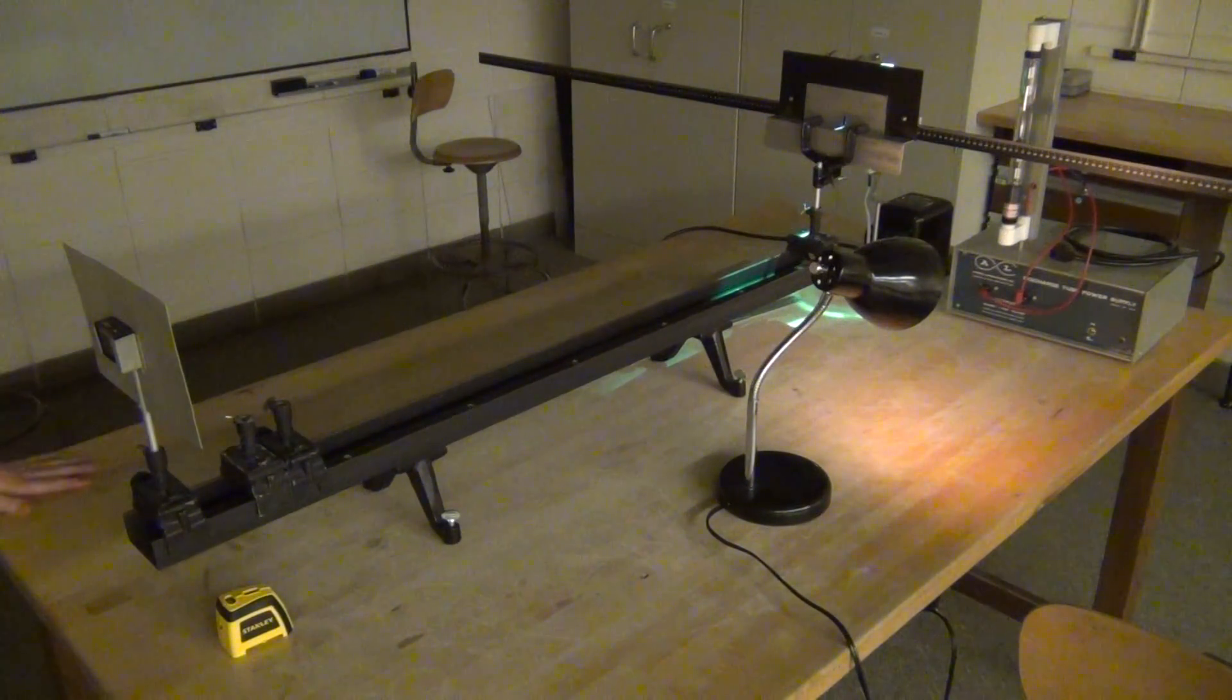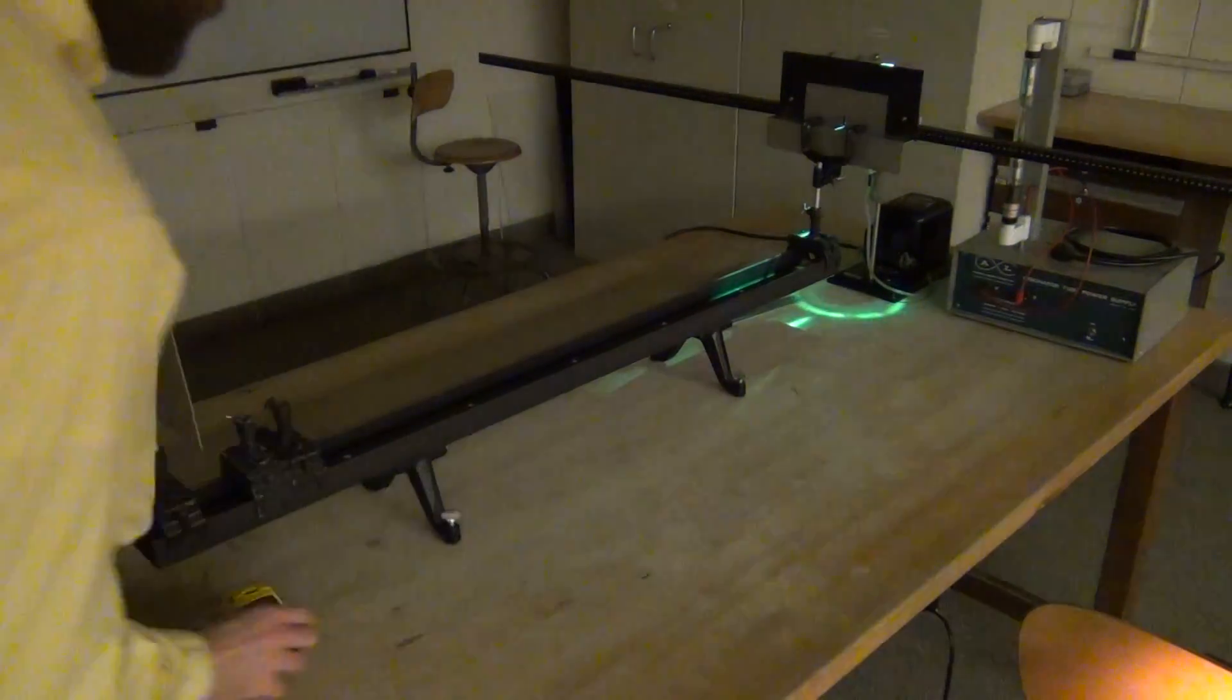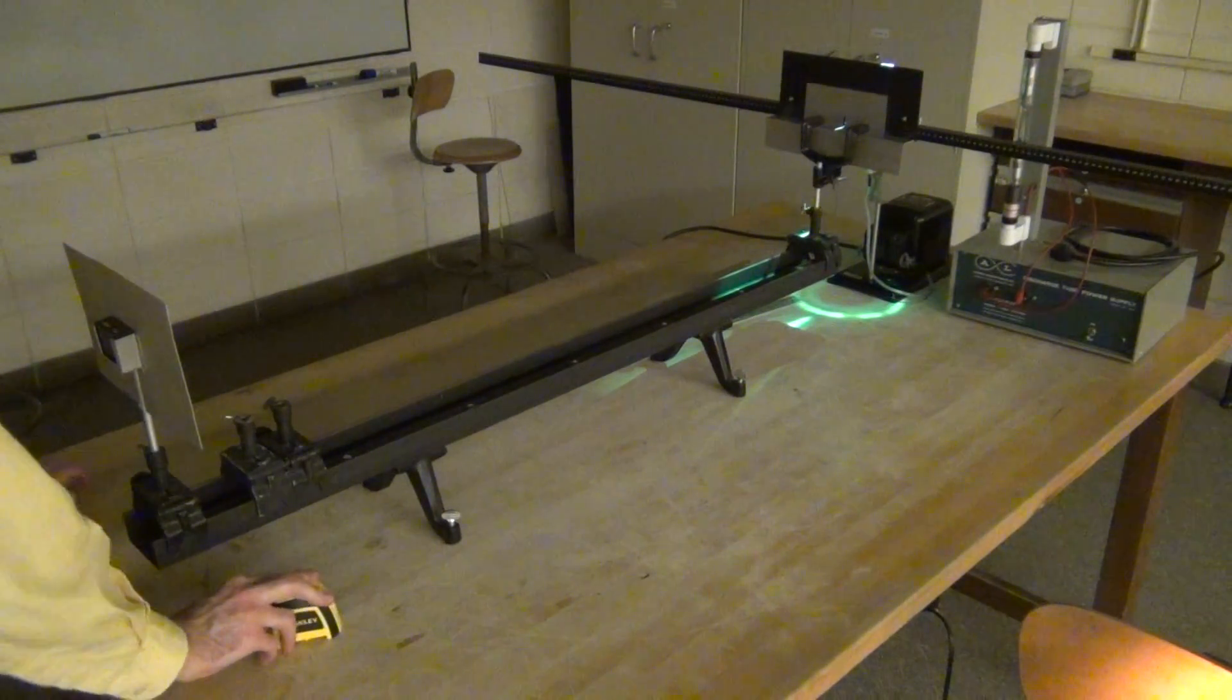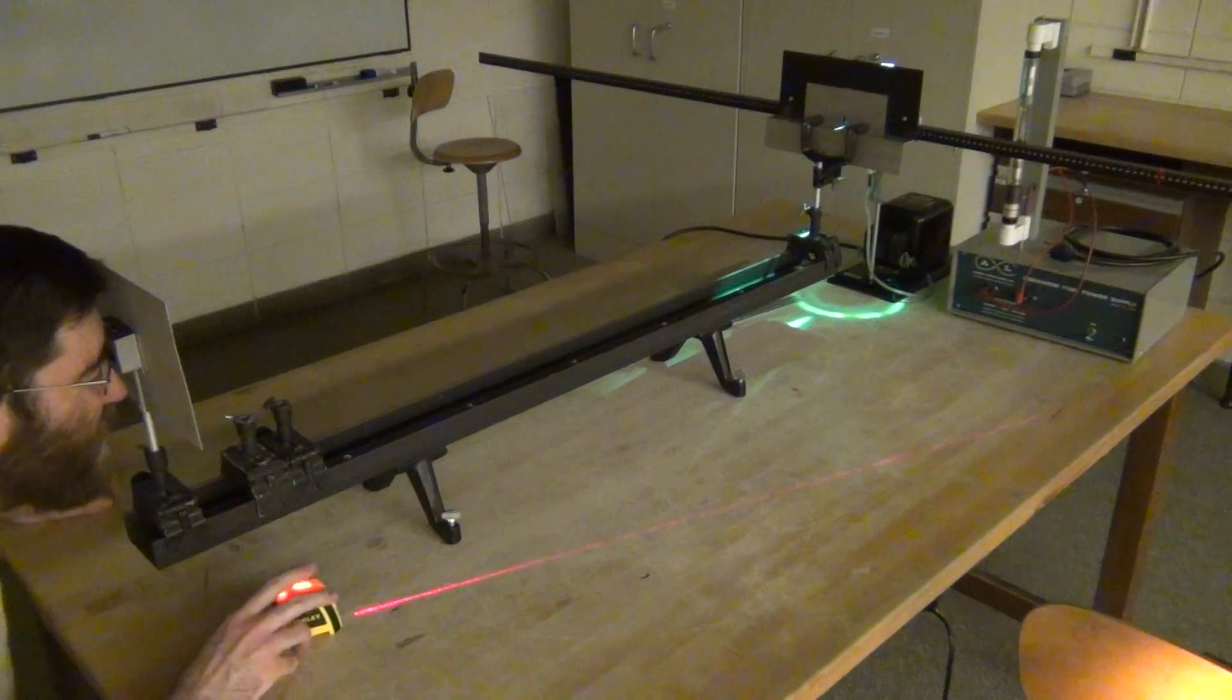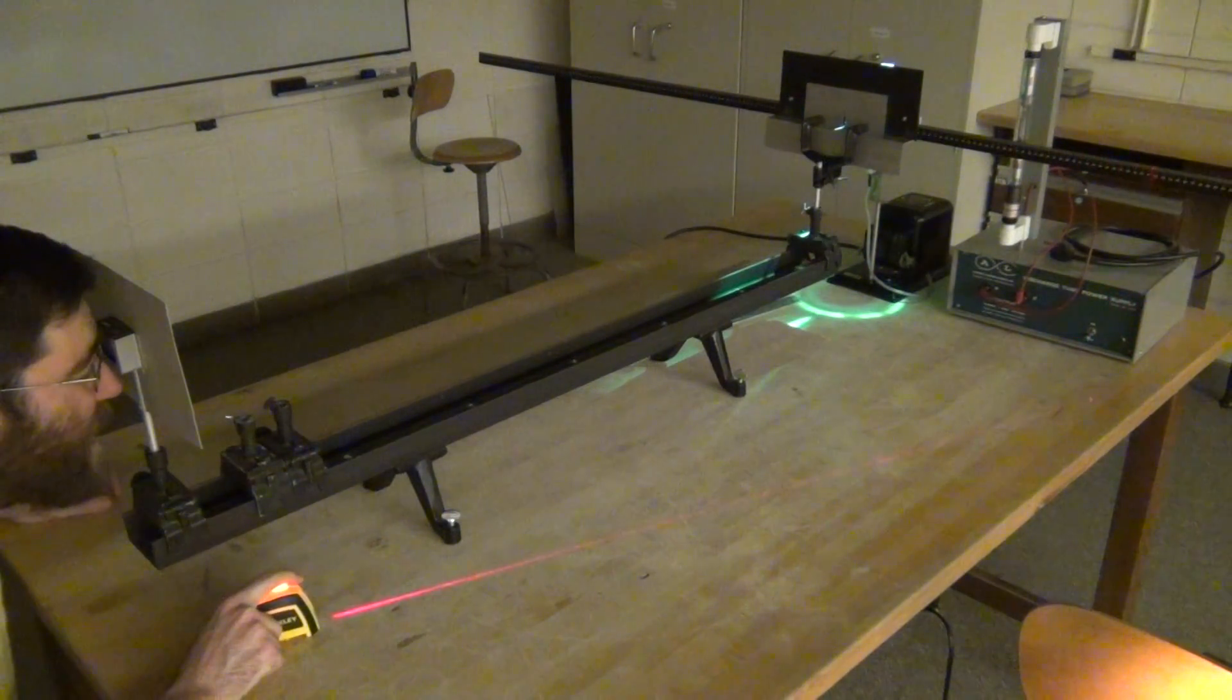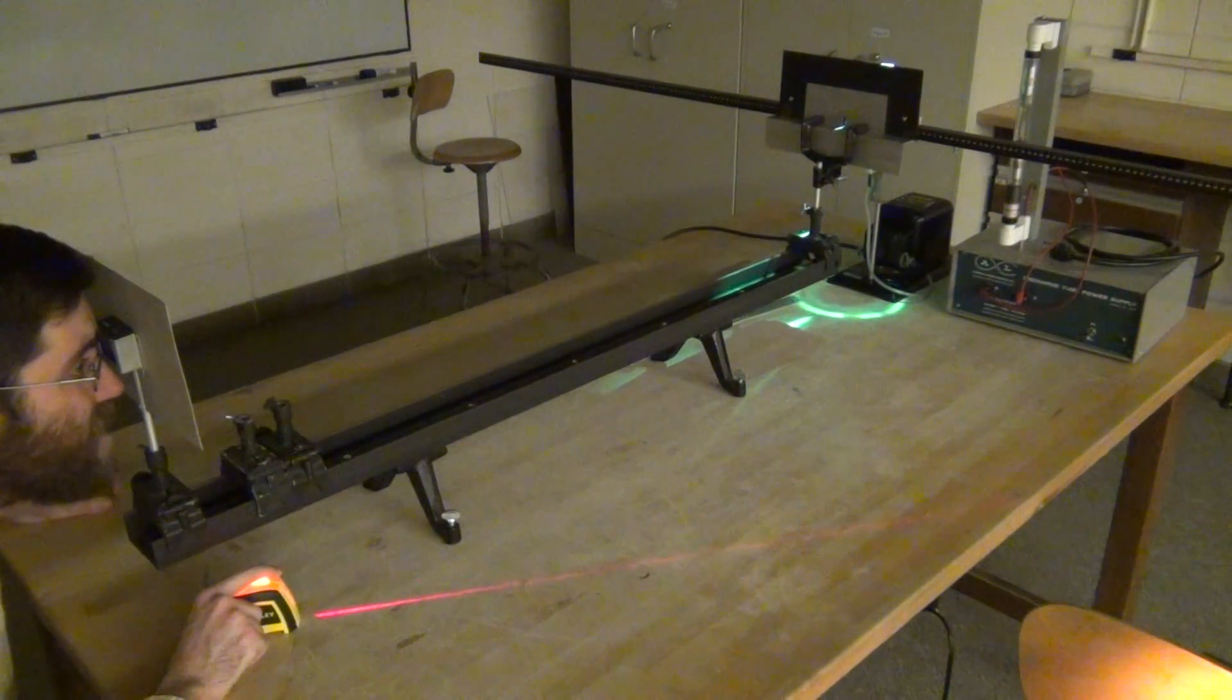But to measure the position more accurately, we'll use the laser line generator. And looking through the diffraction grating and seeing the lines, you can then throw the line onto the ruler.